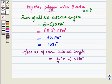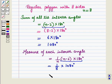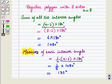The measure of each interior angle is (1/n) × (n − 2) × 180 degrees, which equals (1/8) × 1080 degrees, giving 135 degrees. So the measure of each interior angle of a regular polygon with 8 sides is equal to 135 degrees. In this session we have discussed how to distinguish between different types of curves and how to solve problems involving angle measurement.